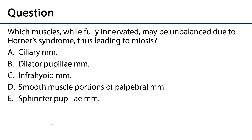That leads us to our assessment question: which muscles, while fully innervated, may be unbalanced due to Horner's syndrome, thus leading to miosis? Options are: A) ciliary muscles, B) dilator pupillae muscles, C) infrahyoid muscles, D) smooth muscle portions of palpebral muscles, or E) sphincter pupillae muscles.